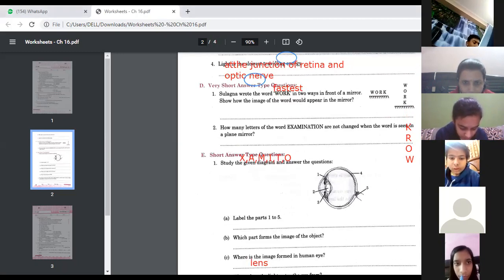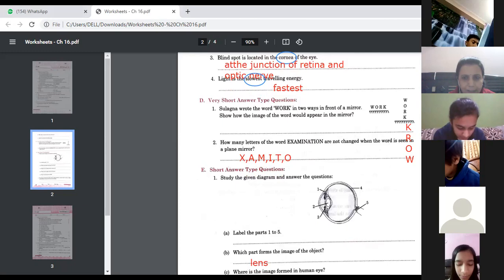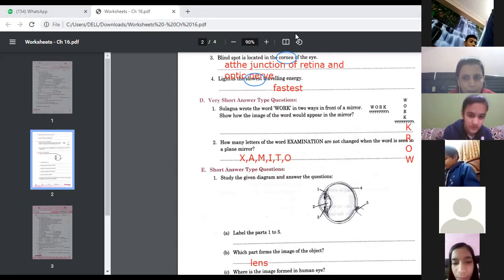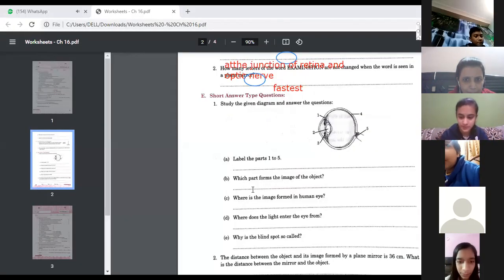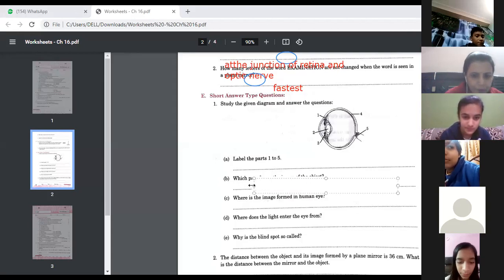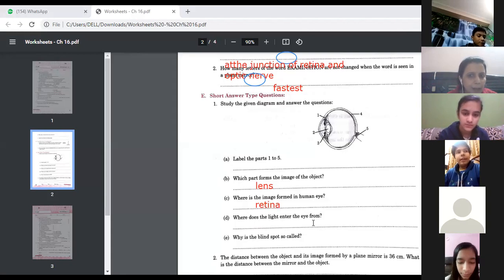If you ask where the image is formed, then you will write down on retina. Image is formed on retina, but which part forms, you may write down lens forms. Where is the image formed in the human eye? Now you can write down retina.